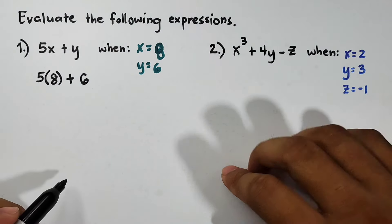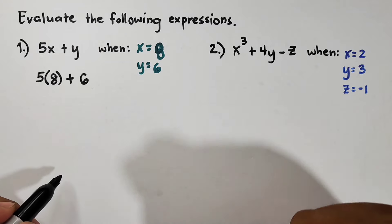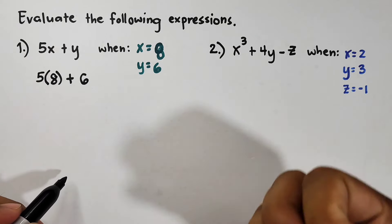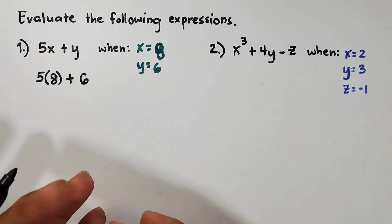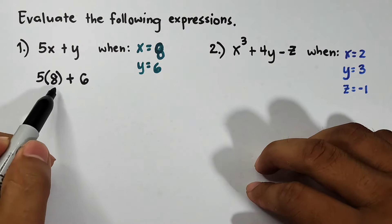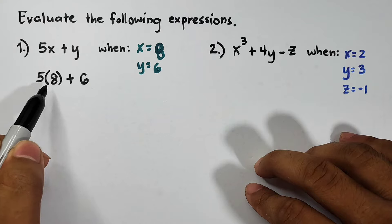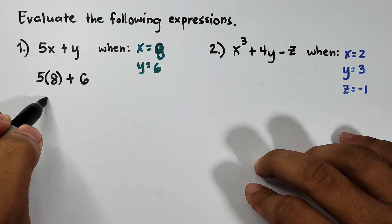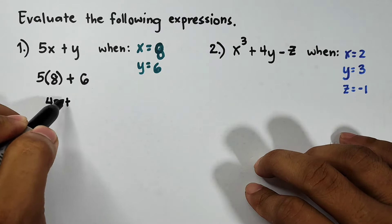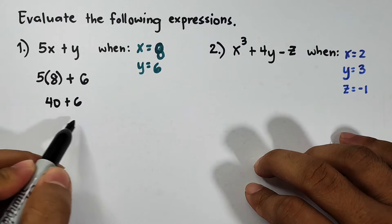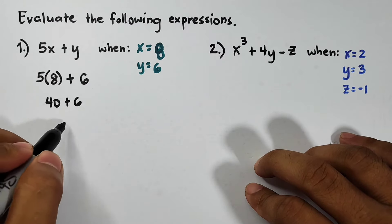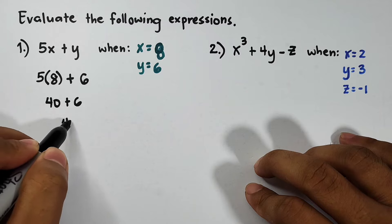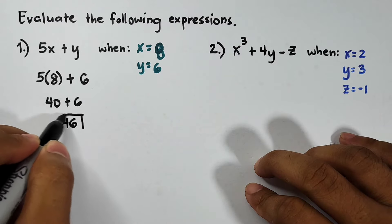And basically after substituting the values, what you need to do is to apply the PEMDAS or other orders of operations. Here we will start with 5 times 8 which is equal to 40 plus 6. Simplifying this, 40 plus 6 is simply 46.